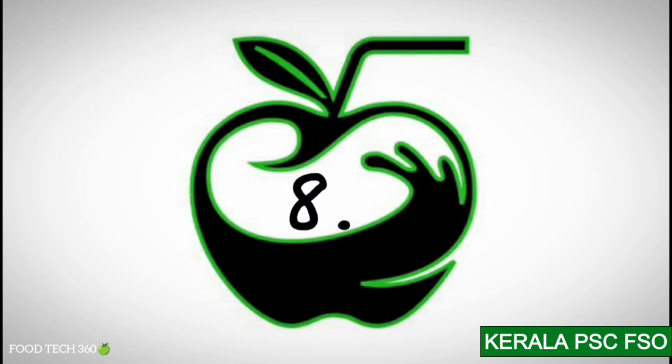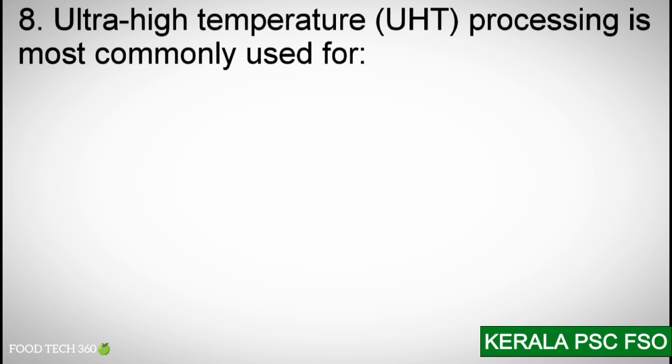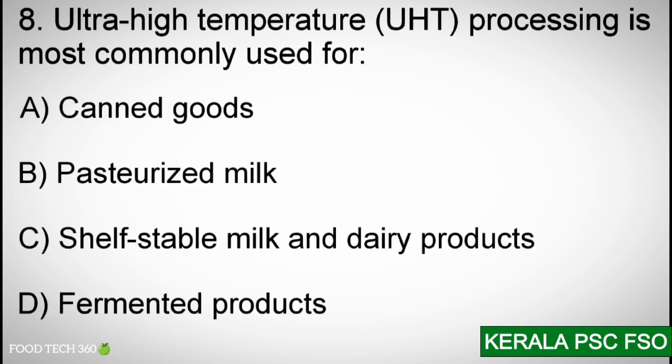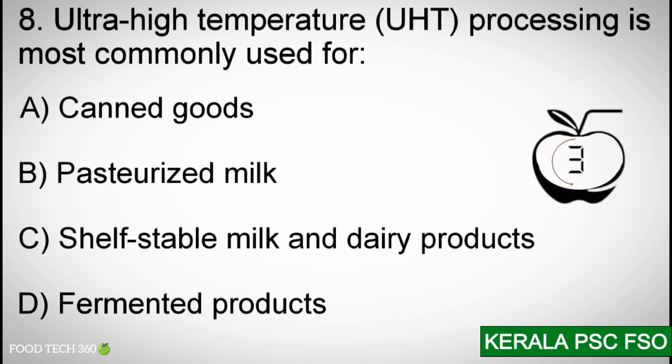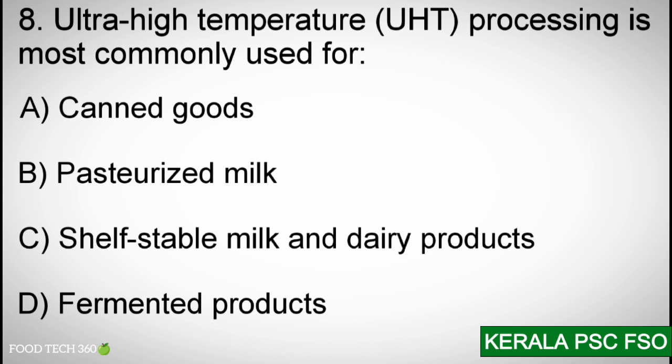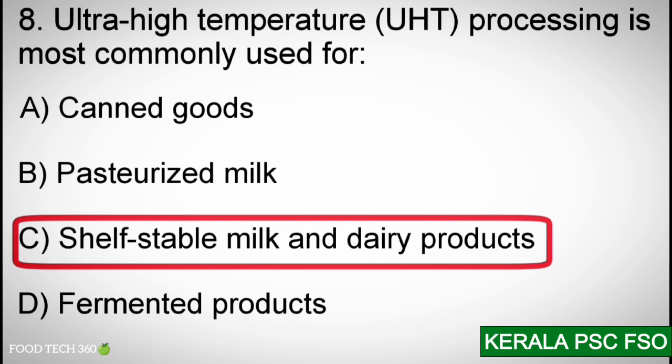Q8: Ultra high temperature processing is most commonly used for — Options: A) Canned goods, B) Pasteurized milk, C) Shelf stable milk and dairy products, D) Fermented products. Correct answer: C — Shelf stable milk and dairy products.